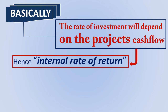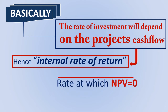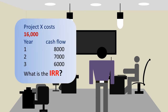IRR is the rate whose discounted rate makes the net present value equal to zero. In the above example we looked at a single project, but in business we tend to look at projects with multiple cash inflows. For example, a project costs $16,000 and is expected to generate cash inflows of $8,000, $7,000, and $6,000 at the end of each year over three years.